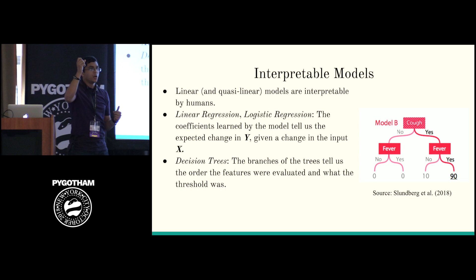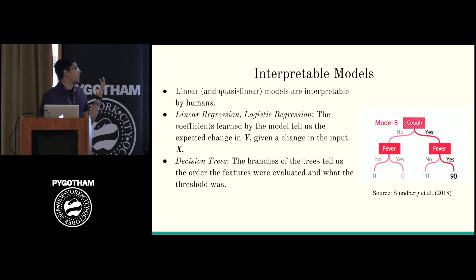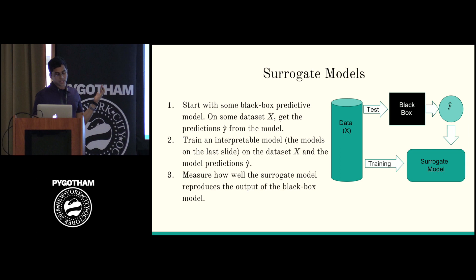These models are globally interpretable. We understand that if we change COF from yes to no, we know to go down the other branch of the tree. In linear regression, if we increase a feature by one unit, we can expect Y on average to increase by the coefficient. These high-interpretability models are not as accurate as random forests or neural networks, so how can we use them for interpretability? We can use them as a surrogate model, also known as a shadow model.